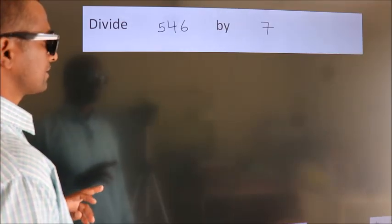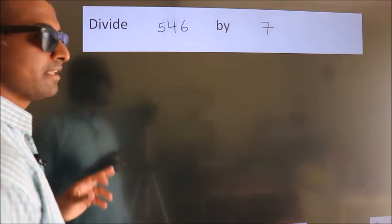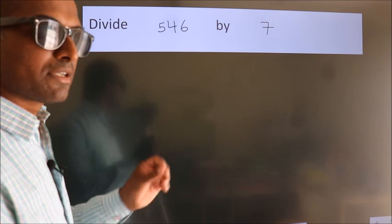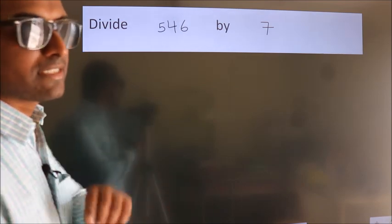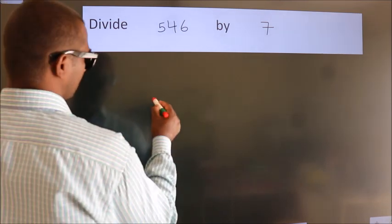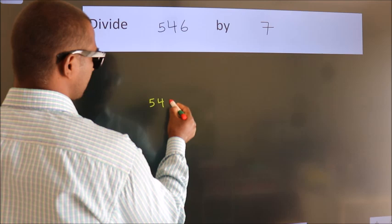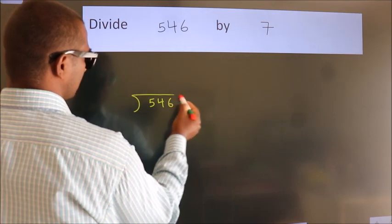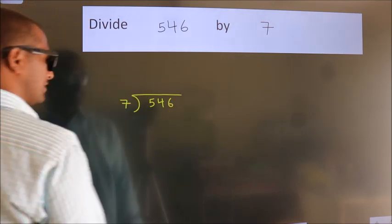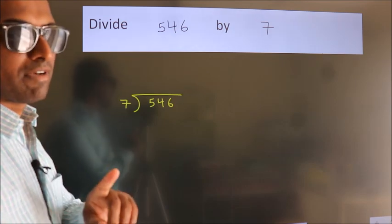Divide 546 by 7. To do this division, we should frame it in this way: 546 here, 7 here. This is your step 1.